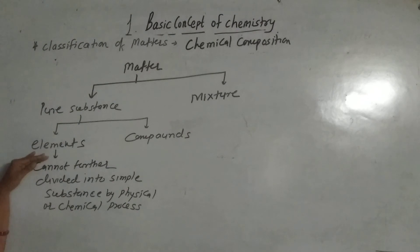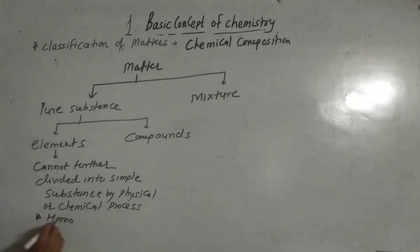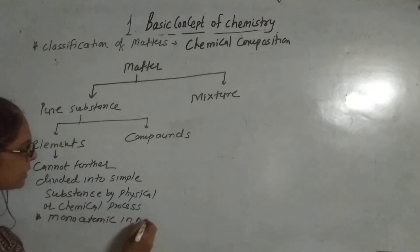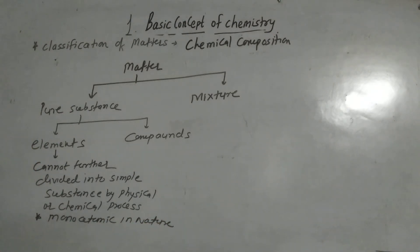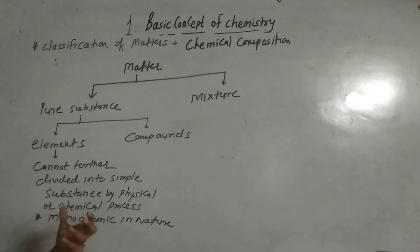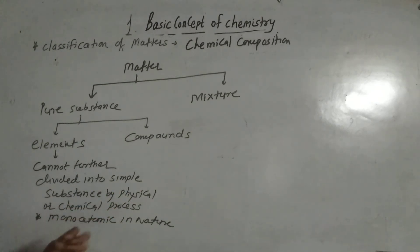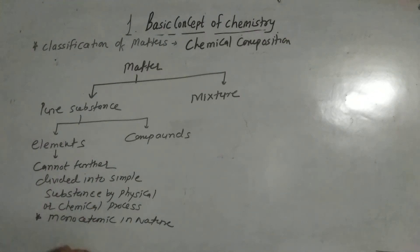Elements are pure substances that cannot be further divided into simple substances by physical or chemical processes. Elements are monoatomic in nature — they exist as a single unit and cannot be further divided. For example, hydrogen, oxygen, nitrogen, copper metal, silver metal — they are homogeneous and cannot be further divided by any simple physical or chemical processes into simpler substances.